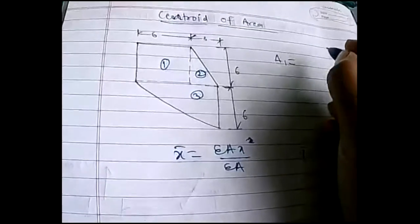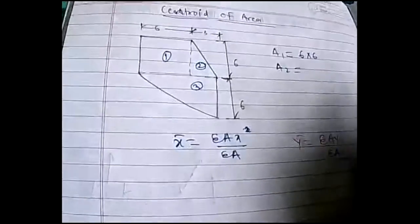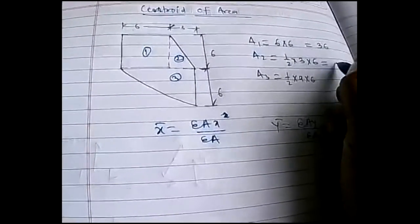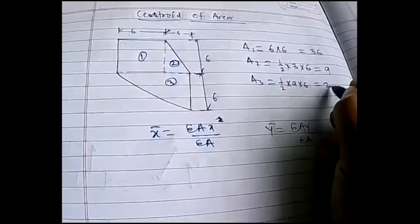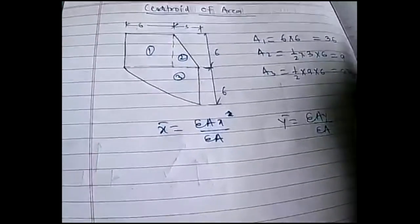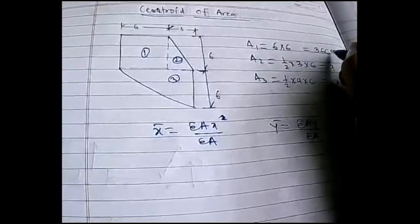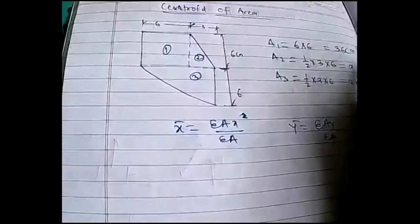We'll work out the areas: A1 is 6 × 6 = 36. A2 is a triangle, so one-half × base 3 × height 6 = 9. A3 is again a triangle with base 9 and height 6, so one-half × 9 × 6 = 27. Units will be cm² for all areas.